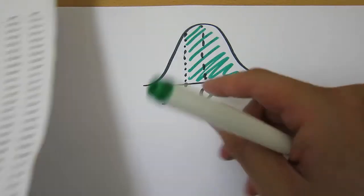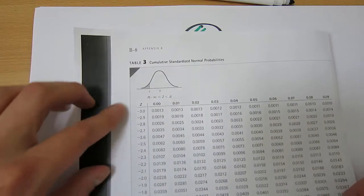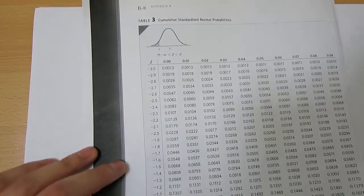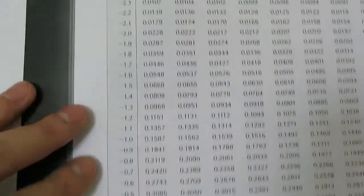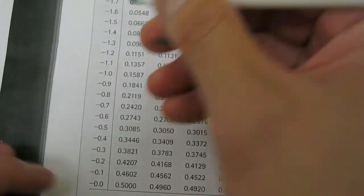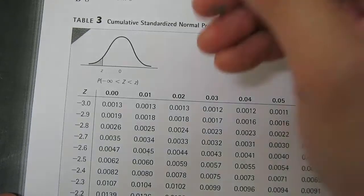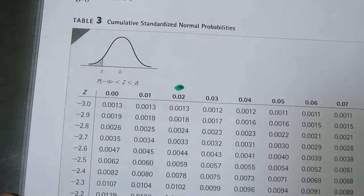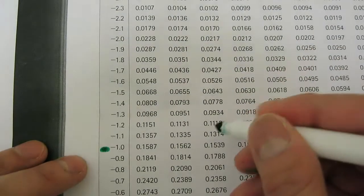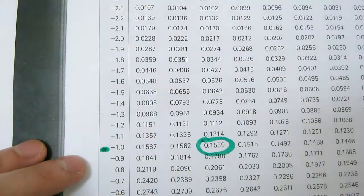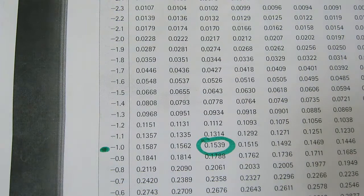So we want negative 1.02. What we do is we look up negative 1.0, so we're looking at this column, and 2, so we're looking at this column, so it's negative 1.02. And we get down here to this value here, 0.1539.